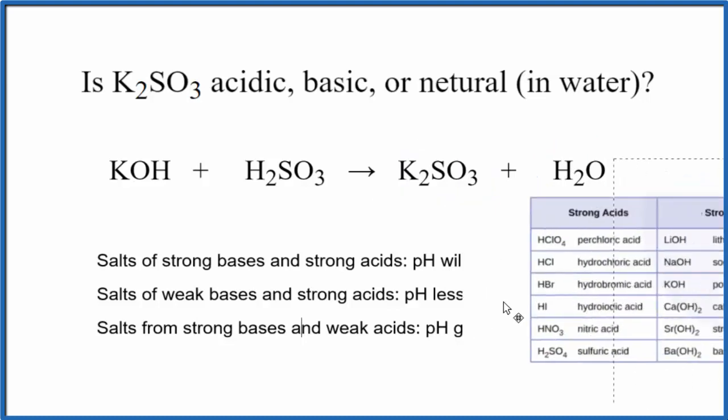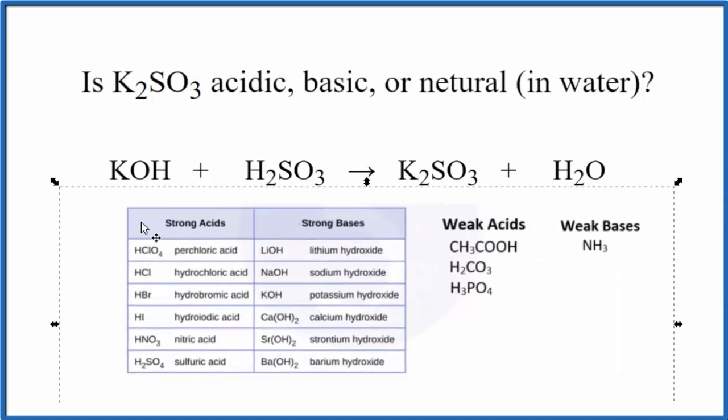So we have our neutralization reaction. Now we need to know the strength of the base and the acid in order to use the rules. So KOH, that's right here, potassium hydroxide, that's a strong base. So let's write SB.